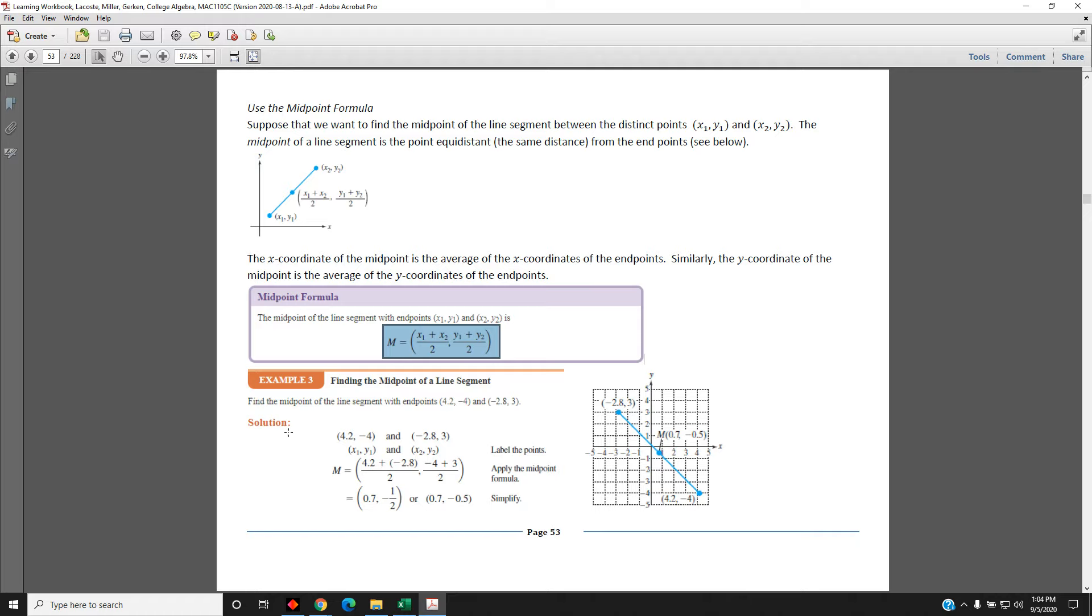Let's look at an example. Example 3: find the midpoint of the line segment with endpoints 4.2 comma negative 4 and negative 2.8 comma 3.